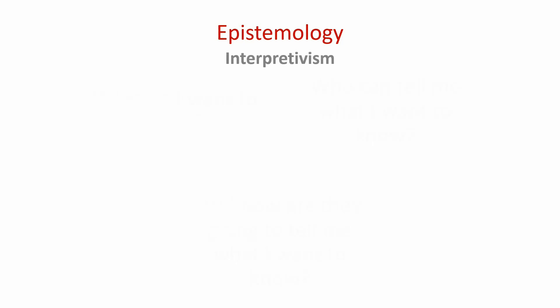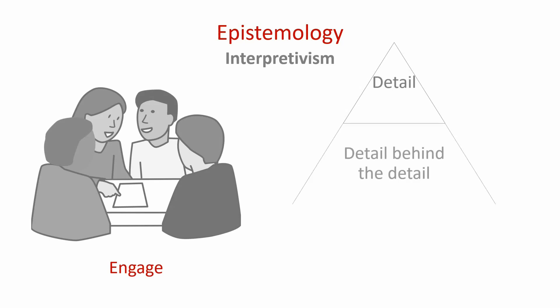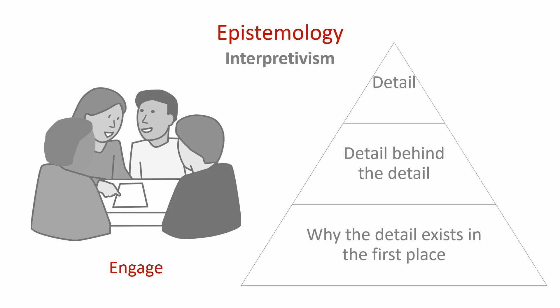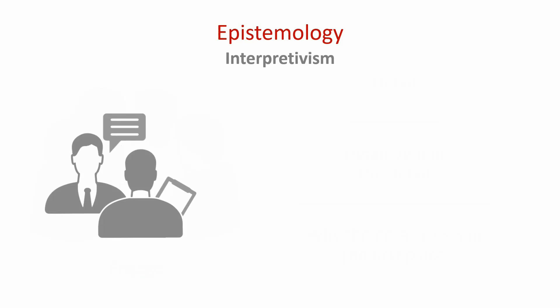Let's look at the epistemological assumptions as they relate to interpretivism. The interpretivist researcher must interact with the participants in the study in order to gain the desired knowledge. This interaction or engagement is not only focused on what meaning an individual attaches to a particular phenomenon, but also focused on how the individual arrives at that meaning. In other words, we want to know the details of a situation, the details behind the details of the situation, and the motivating actions of why the details are there in the first place. This may mean that instead of an anonymous questionnaire, we may want to use an interview, because that would promote engagement with our participants more.